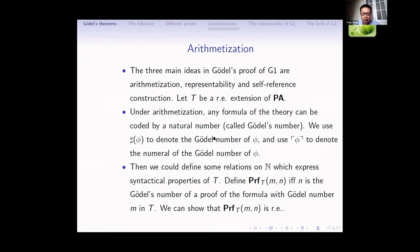Under arithmetization, any formula of the theory can be coded by a natural number, called its Gödel number. Under the arithmetization, any formula and any finite sequence of formulas can be coded by a Gödel number. Then we can define some relations on natural numbers which express syntactical properties of T. For example, we can define a binary relation meaning that n is the Gödel number of a proof of the formula with Gödel number m in T. Since T is an RE extension of PA, we can show that this binary relation is RE.